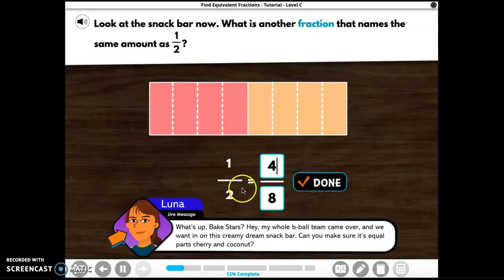So that means that one half is the same as four eighths. That's right. So one half and four equals four eighths. They're both equivalent fractions. They're just cut into smaller slices.